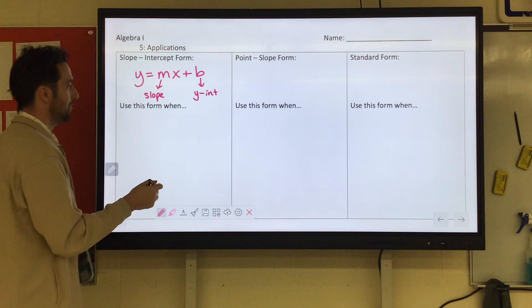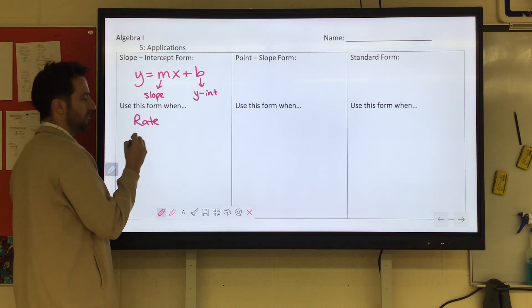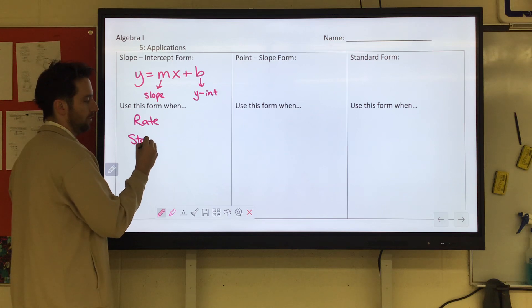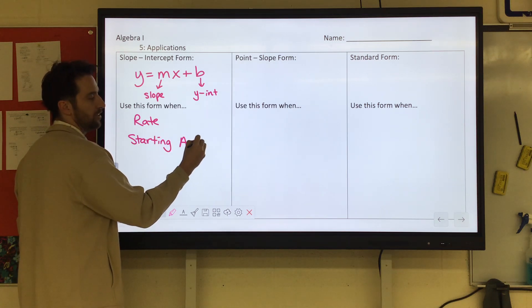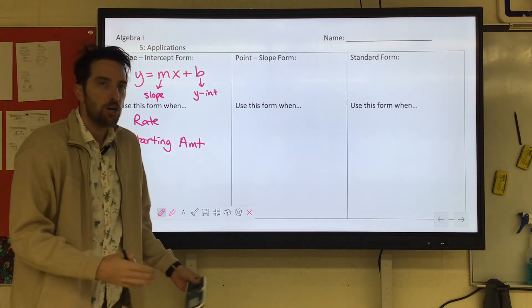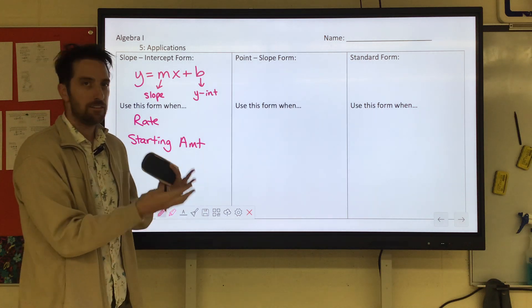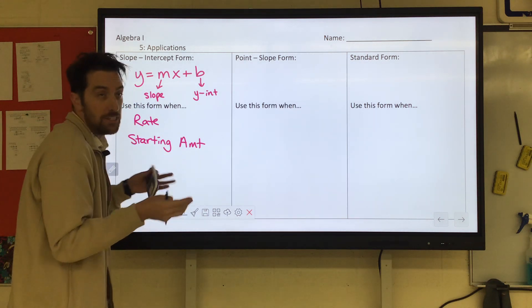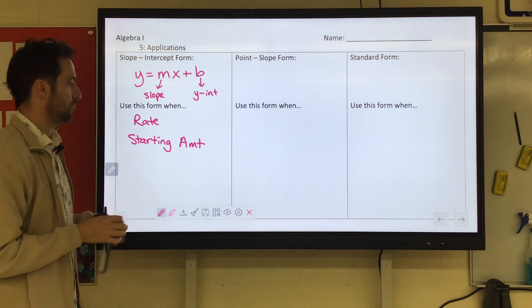So this is great when it gives you a rate and a starting amount. It'll say like, it costs $10 to get into the club plus $1.50 per Pepsi. Starting amount would be the $10 it costs to get in. The $1.50 per Pepsi would be like your rate. So that's when slope-intercept form is nice.